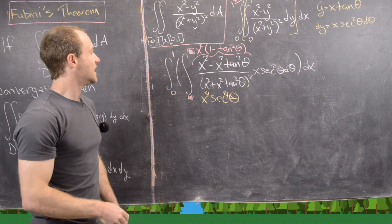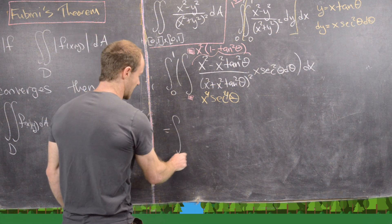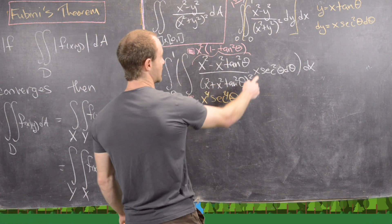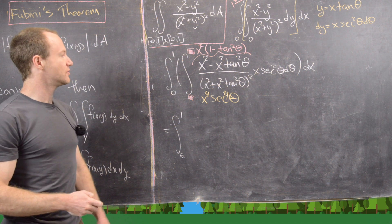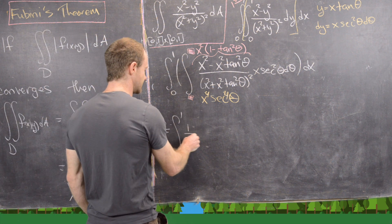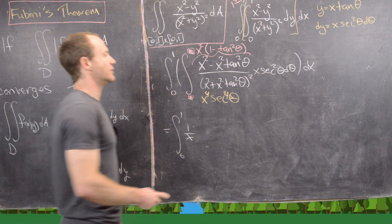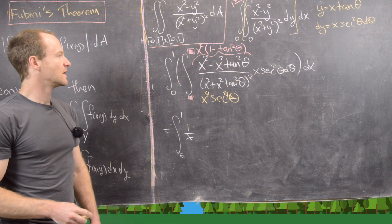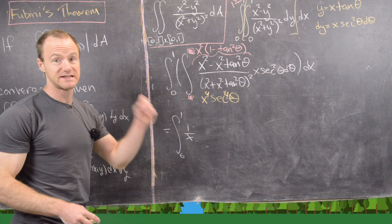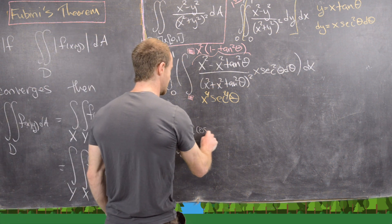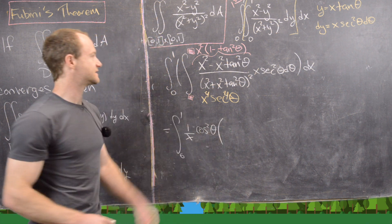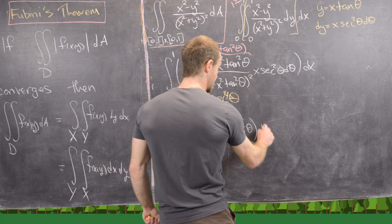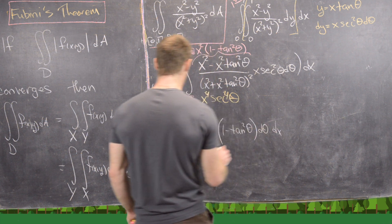A lot of things cancel. We have x² times x (from dy) in the numerator — that's x³ — over x⁴ in the denominator, giving an overall factor of 1/x. For the trig part, sec²θ in the numerator over sec⁴θ in the denominator gives sec²θ in the denominator, which is cos²θ in the numerator. So we get (1/x) · cos²θ · (1 − tan²θ) dθ dx.